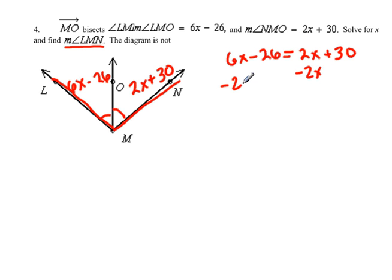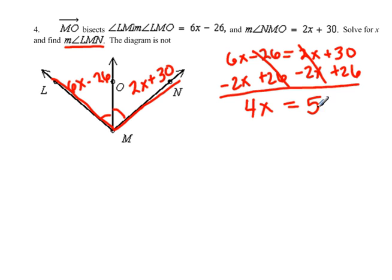Solve for x. I'm going to subtract, and I'm going to do two steps at once. I'm going to add 26 at the same time. So that gives us 4x equals 56. Solving for x, I'm going to divide by 4. X would equal 14. So it wanted to know what x is, but it also wanted us to find the value of LMN. Now, since LMN is the whole thing.